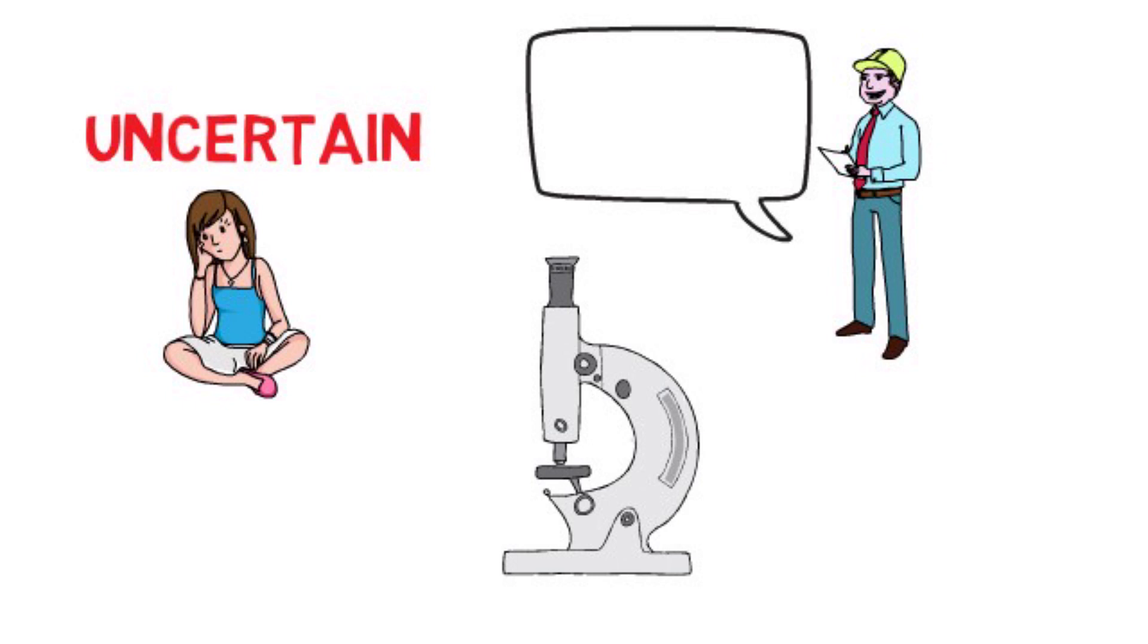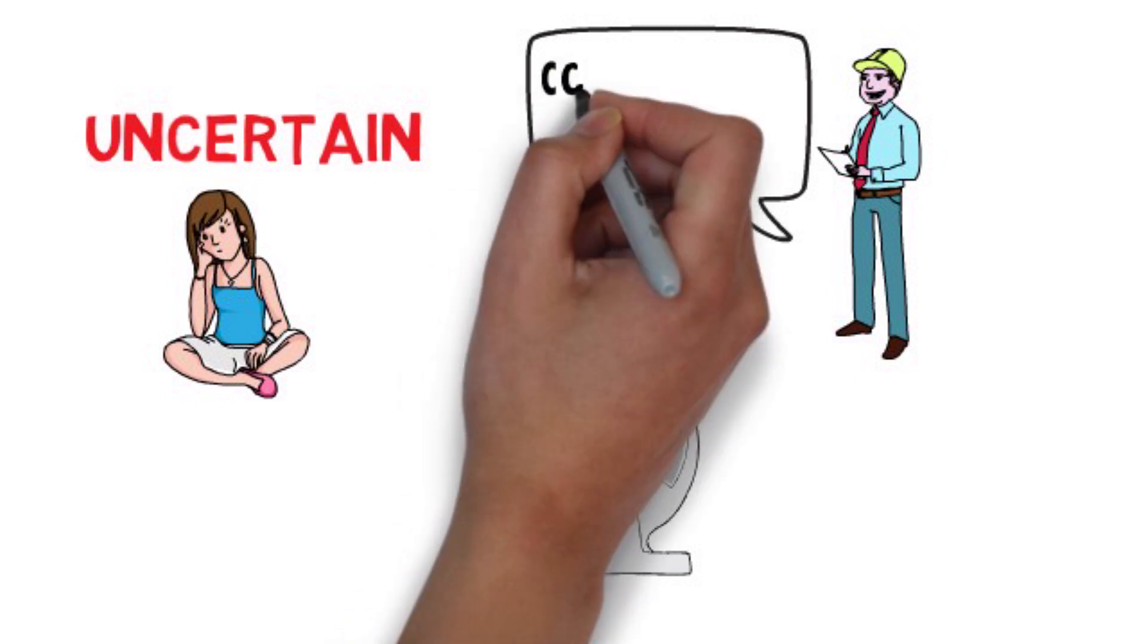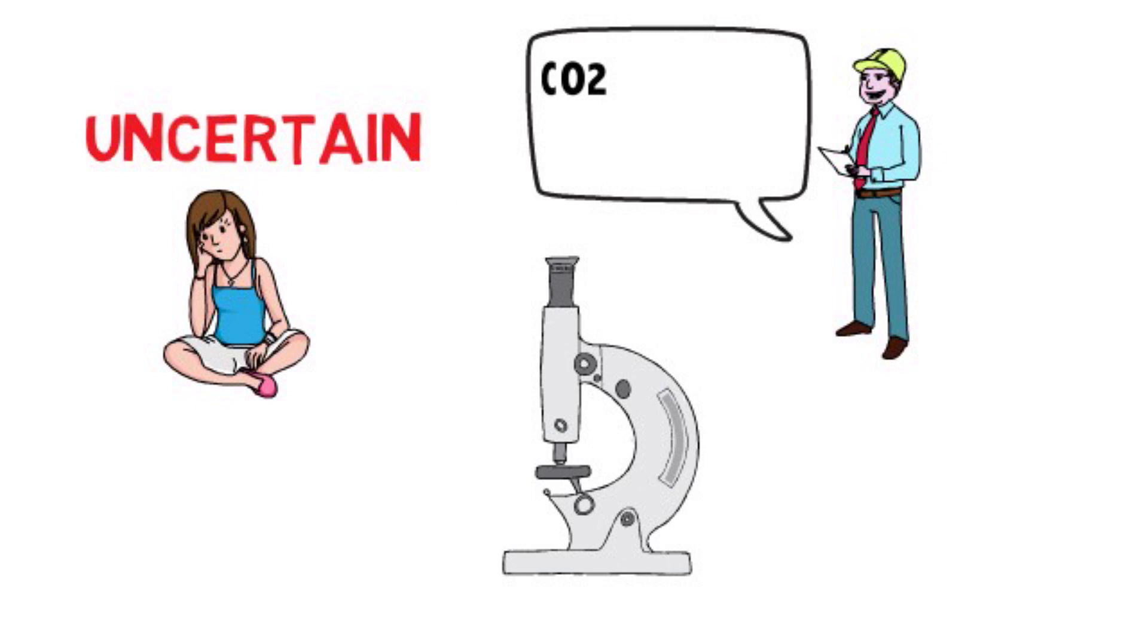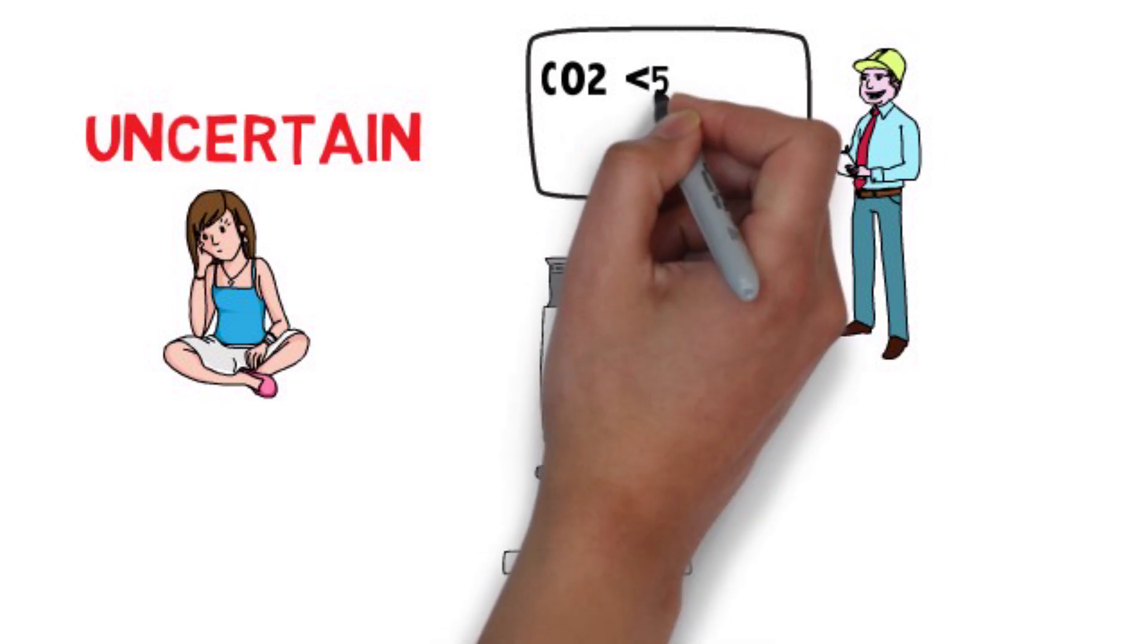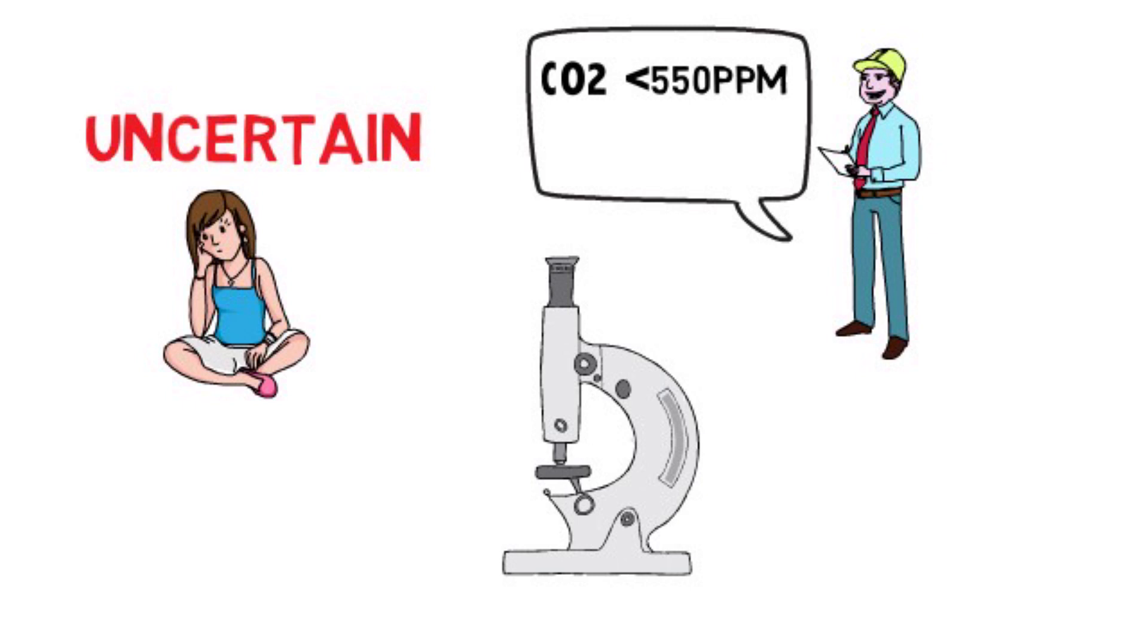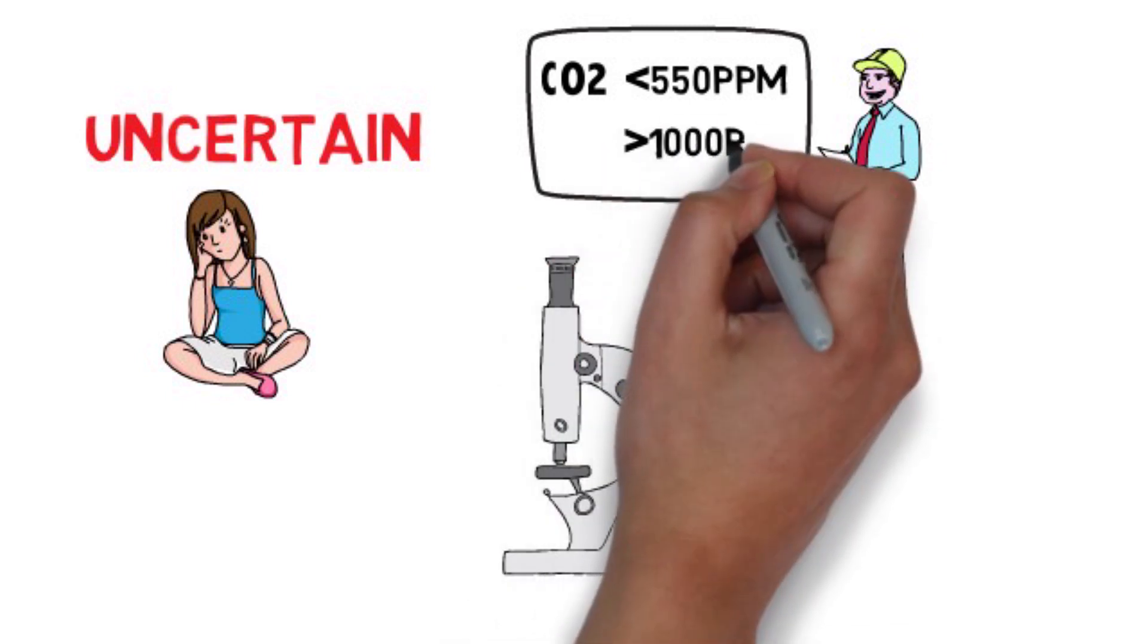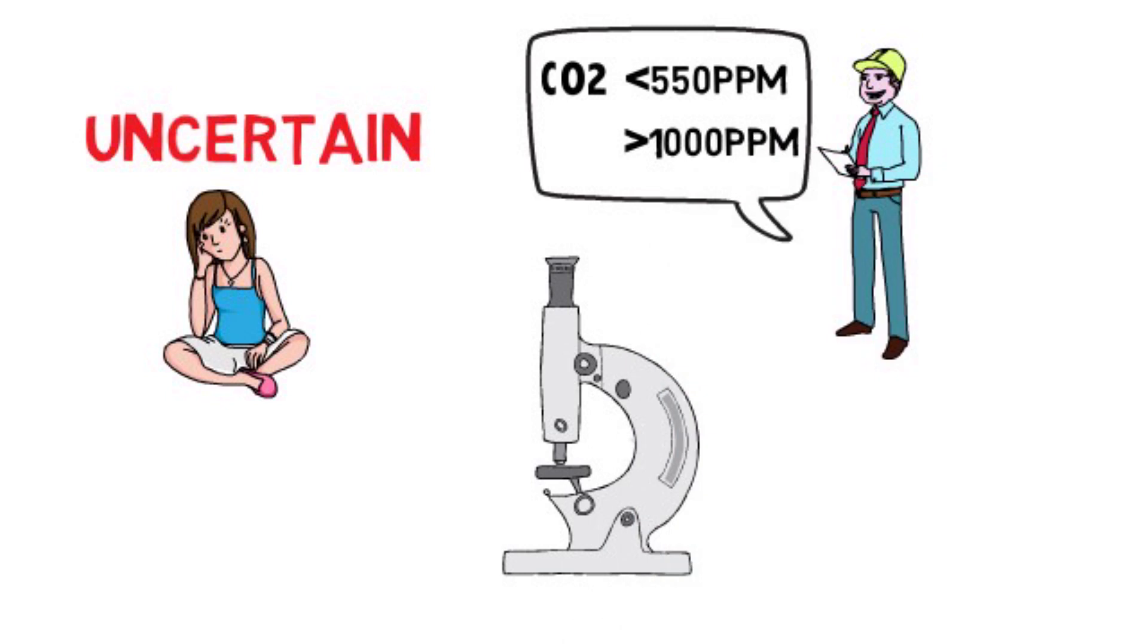The current solution is using room carbon dioxide levels as an indicator. If the CO2 level is lower than 550 parts per million, you should be safe, even when there are infected patients in the same room. If the level is higher than 1,000 parts per million in a closed space, such as a basement, you'd better leave ASAP, no matter if there are patients there.